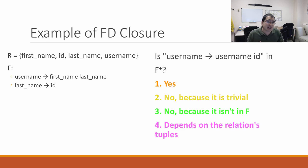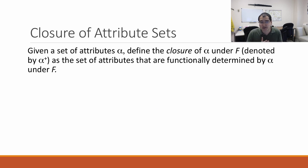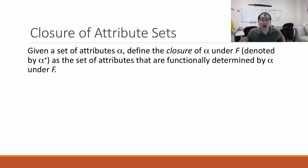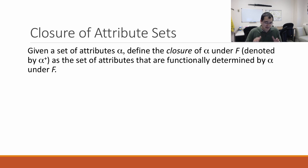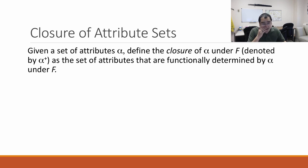The next thing to discuss is a different type of closure called attribute set closures. If you're given a set of attributes — here denoted alpha, the standard notation — the closure of a set of attributes under F, a bunch of functional dependencies, is denoted by alpha+. These are the set of attributes that are functionally determined by alpha under F. Basically: given a set of attributes alpha, what are all the other attributes that are functionally determined by alpha as well?